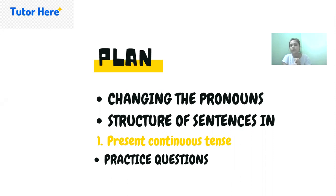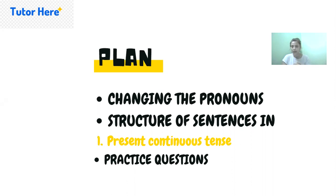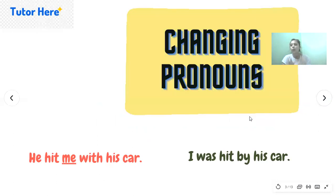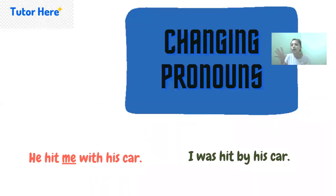Before starting the session, let's discuss the three rules of active and passive voice. The first rule was the interchange between the subject and the object. The second rule was the change in verb. And the third rule was the addition of 'by' in passive voice.